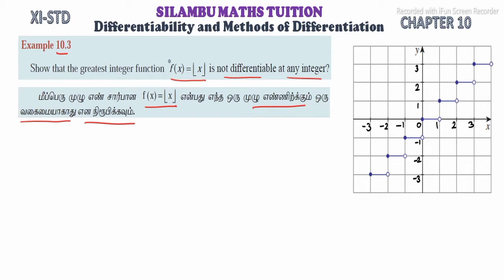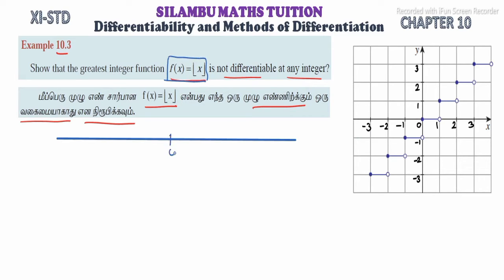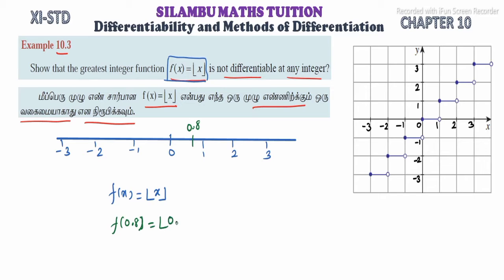f(x) is equal to the greatest integer function of x. Now, if we choose a value like 0.8 and apply it, the greatest integer function of 0.8 gives us 0, which is the greatest integer to the left side of 0.8. So that is our outcome.